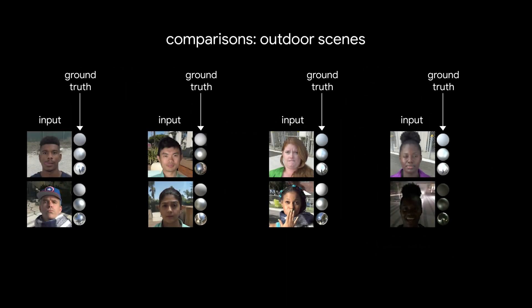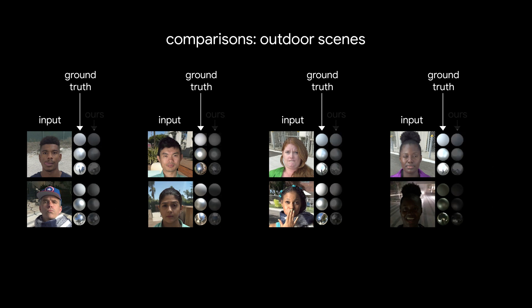Now let's take a look at some results from our method. First, here's an input portrait with ground truth illumination for a few outdoor scenes. Now we'll add our lighting inference, shown by rendering the three deep light spheres. Overall, we've matched the color, intensity, and directionality of the lighting.